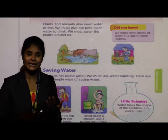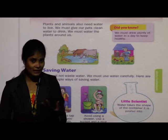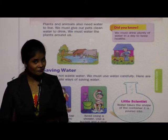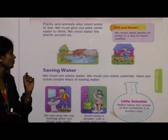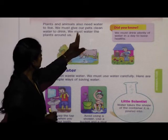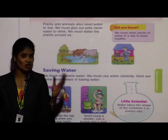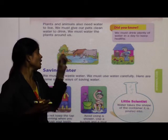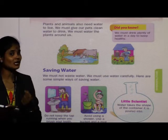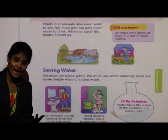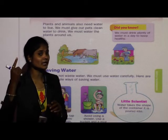Why? Because drinking contaminated or dirty water may cause many diseases like cholera, dysentery, and typhoid. So you must drink clean water, not dirty water. We must also water the plants around us. If there are plants in your garden or surroundings, water them regularly. If those plants do not get water, they may dry up or die. Plants also need water for their growth.